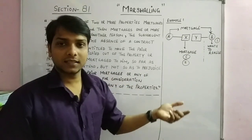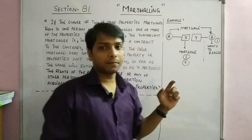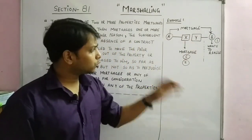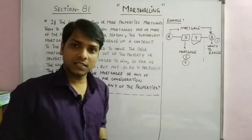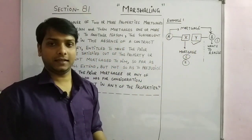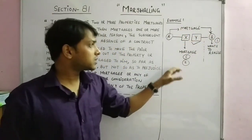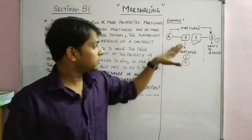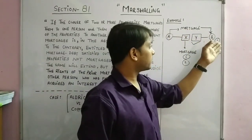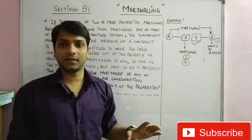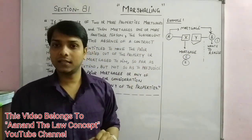Since C also has a right over X, C can compel B — saying: Mr. B, please first satisfy yourself from property Y, which was not mortgaged to me. Whatever you need to do — sell it or otherwise — first do it from Y. Only if your amount is not satisfied from Y should you then touch property X. This is Marshalling: C can compel B to first realize himself from the property not mortgaged to C.